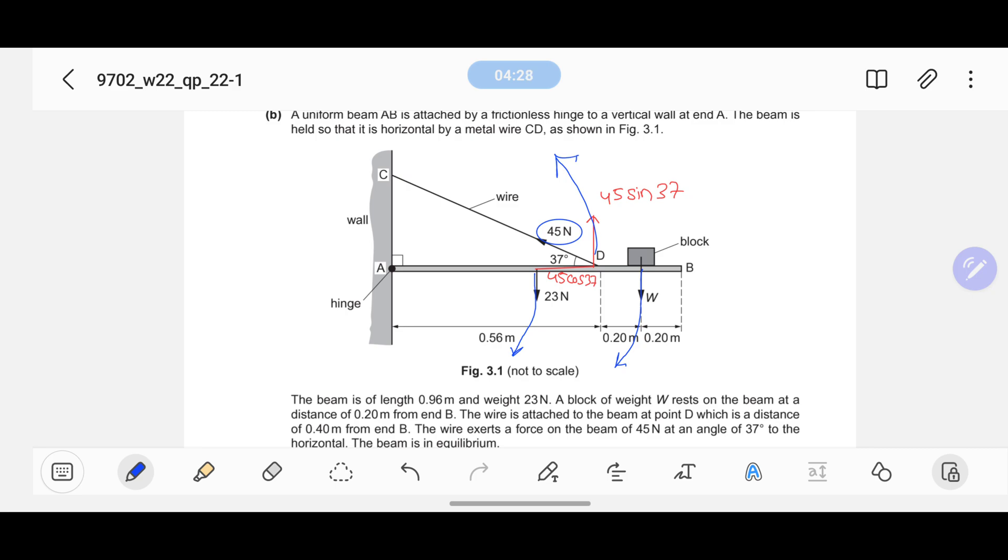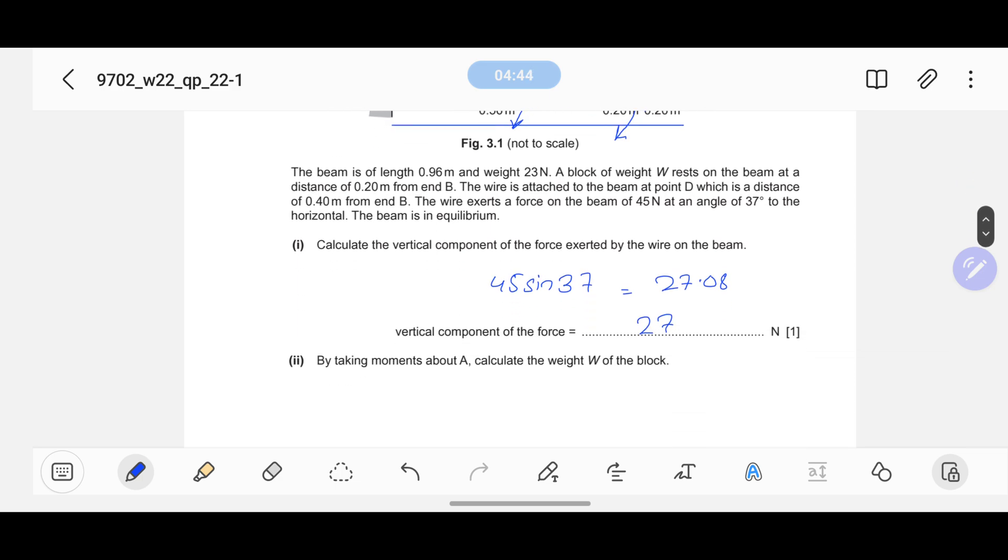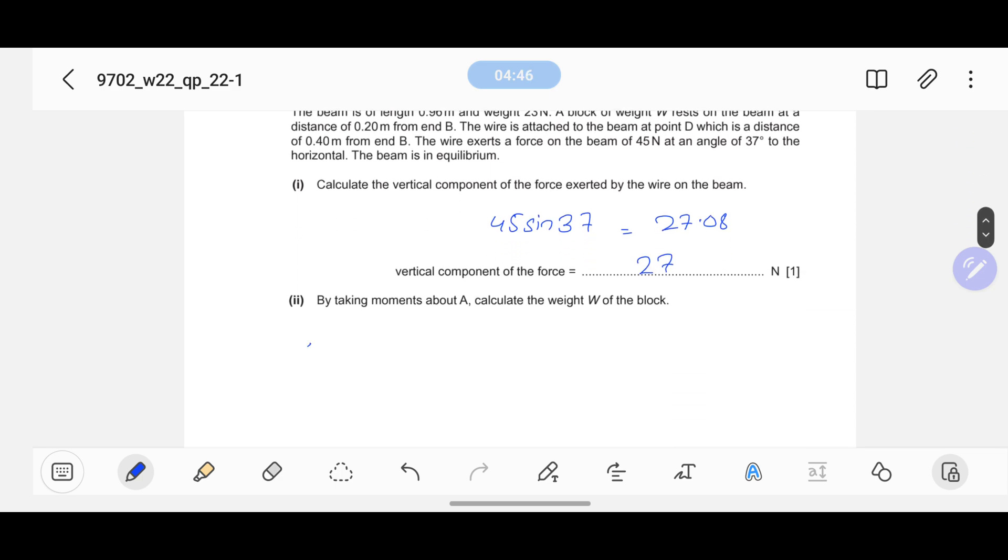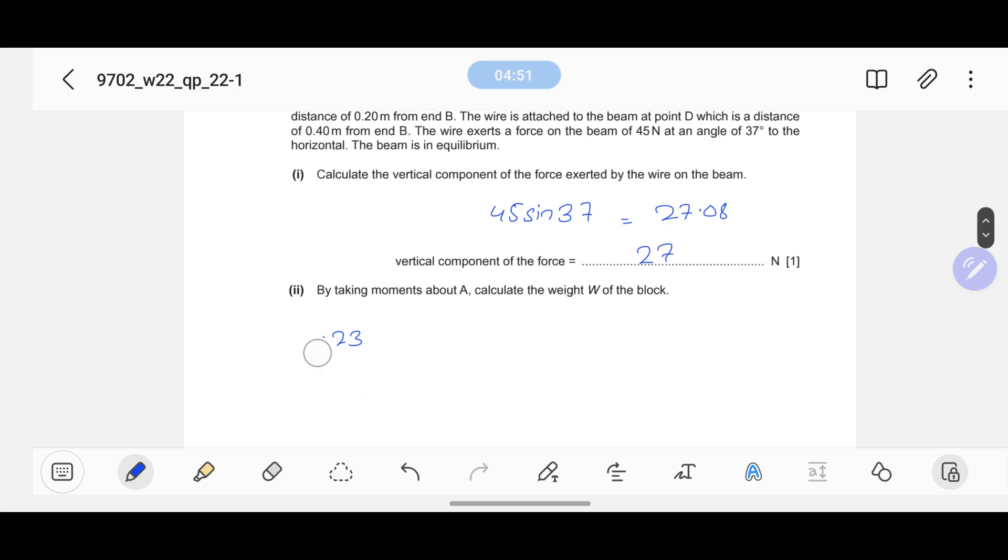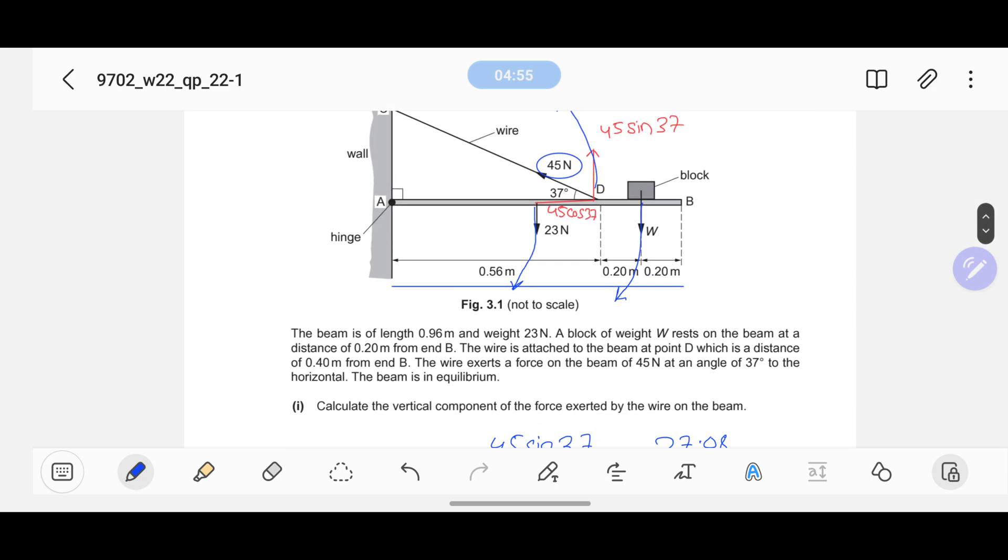This whole is 0.96 meters. Divide by 2 is the point where this 23 Newton force is acting, because this is the center of gravity. We can write: 23 Newton multiplied by 0.96 divided by 2, which makes 0.48 meters. This is a clockwise movement.